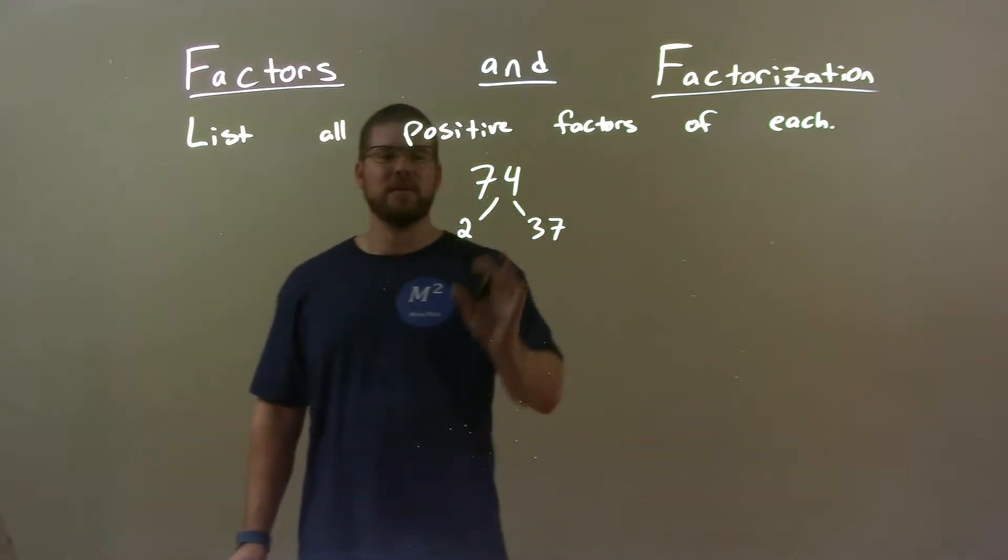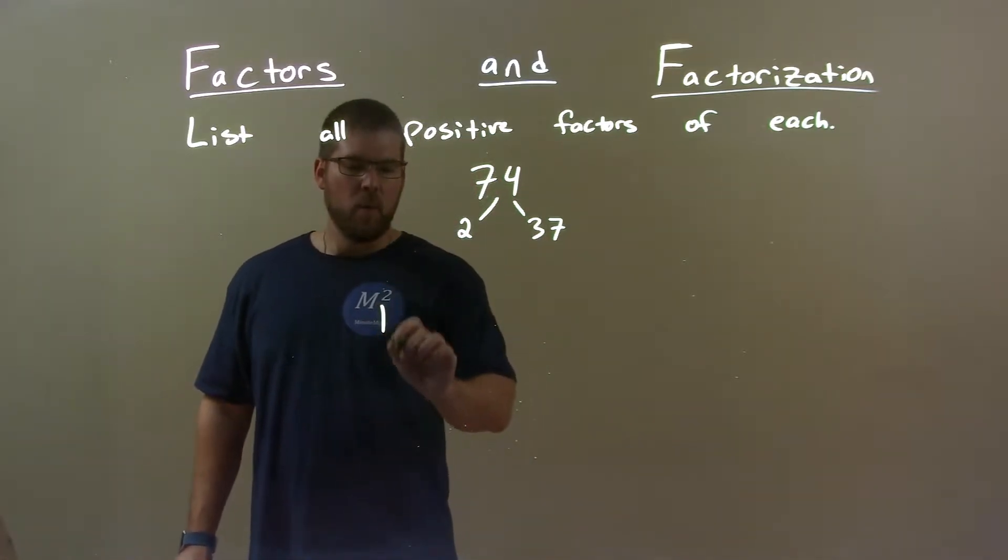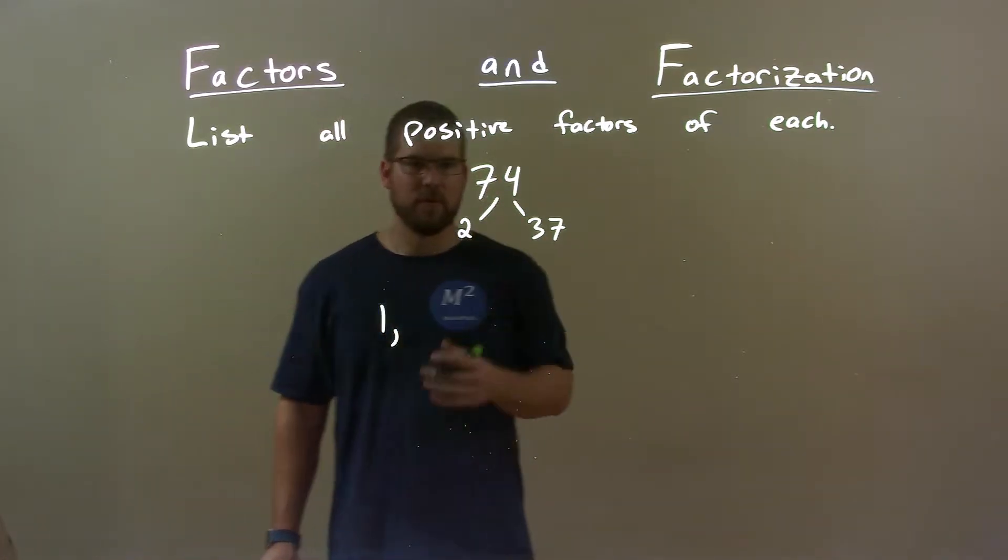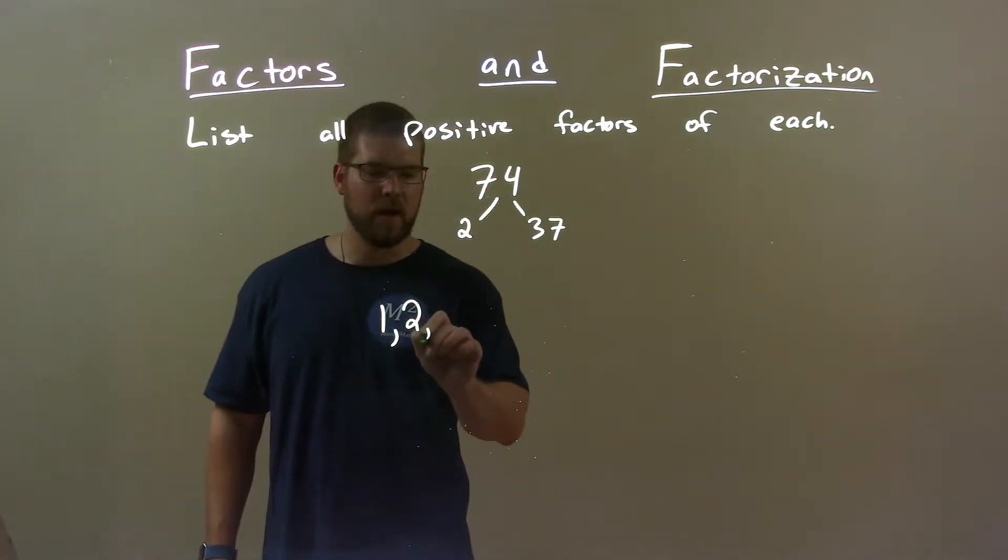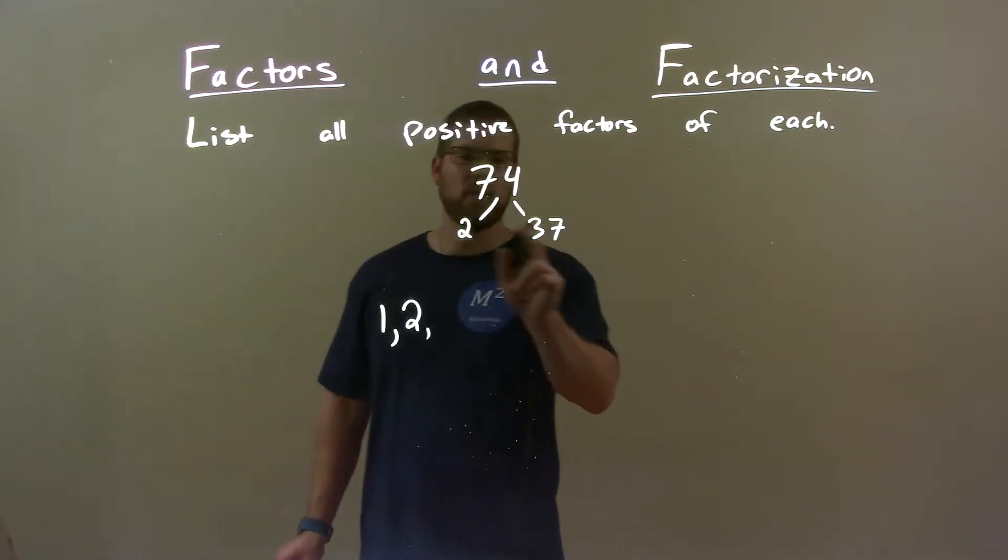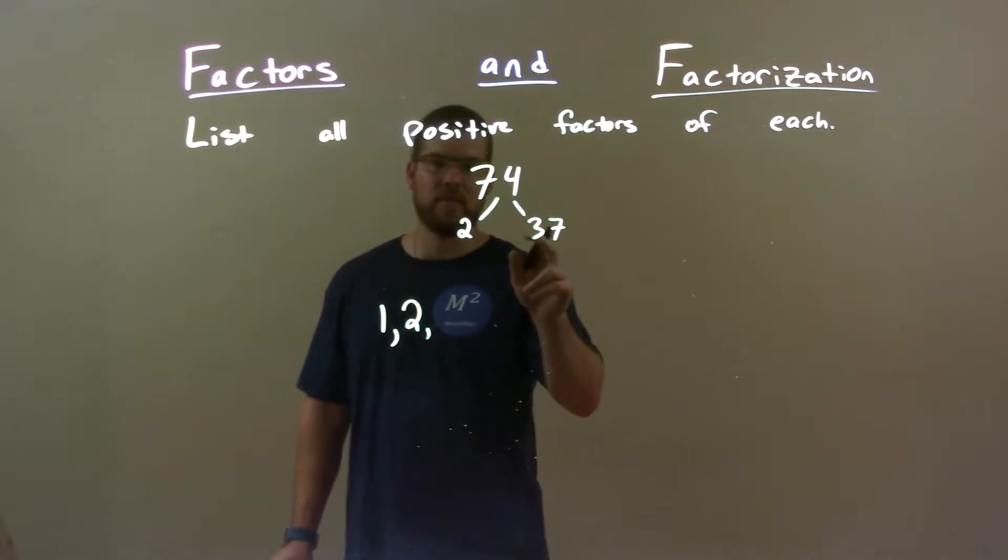So this actually makes our list very short. 1 will always go into 74. It's always a number here. 2 is the next one up, but we have to find numbers that are multiplied from these prime numbers, or the numbers itself.